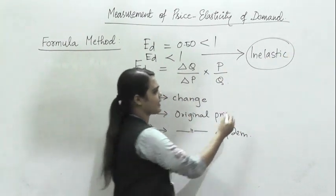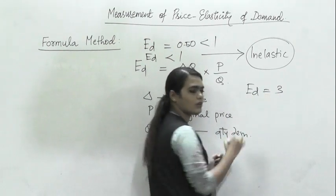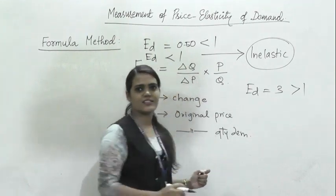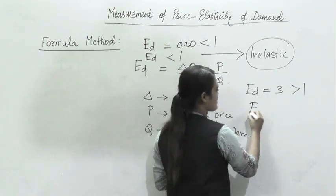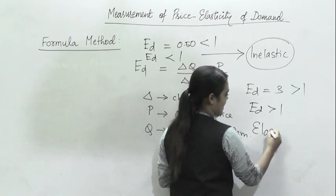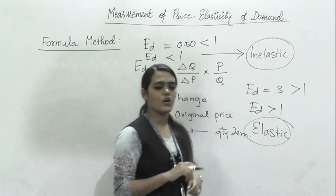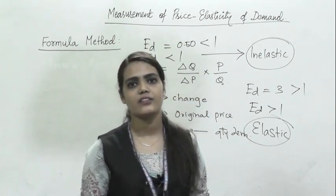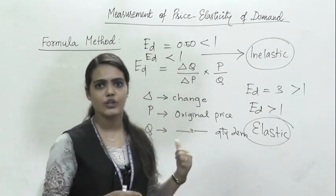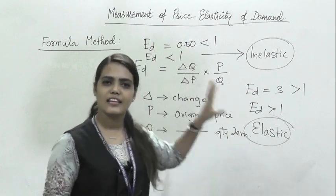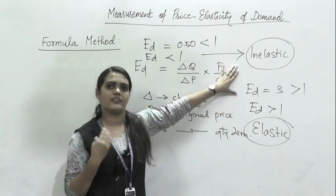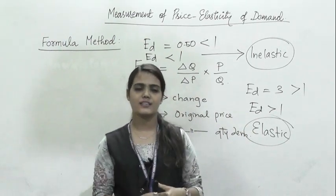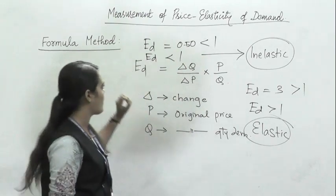If the elasticity calculated comes to 3, then 3 is greater than one, meaning the elasticity of the given product is greater than one — it has elastic demand. When calculating through a numerical example, elasticities are basically divided into either inelastic or elastic: either they respond to a change in price or they do not.